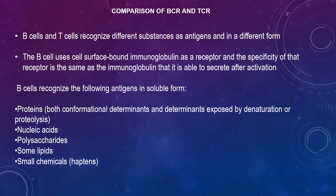B cells recognise the following antigens in soluble forms: proteins, nucleic acids, polysaccharides, some lipids, and small chemicals such as haptens, which was covered in the previous video.